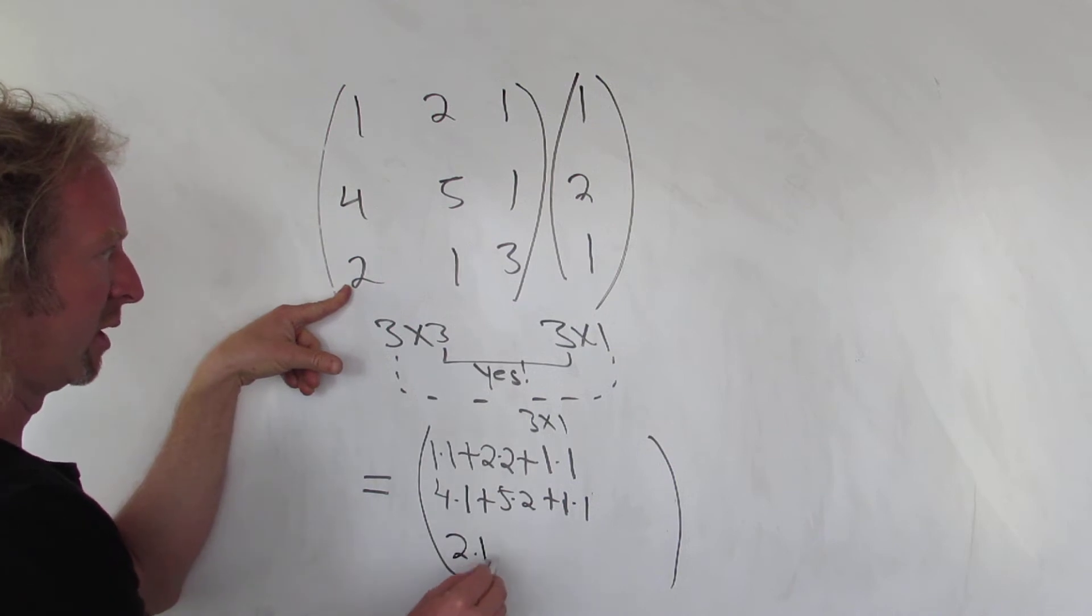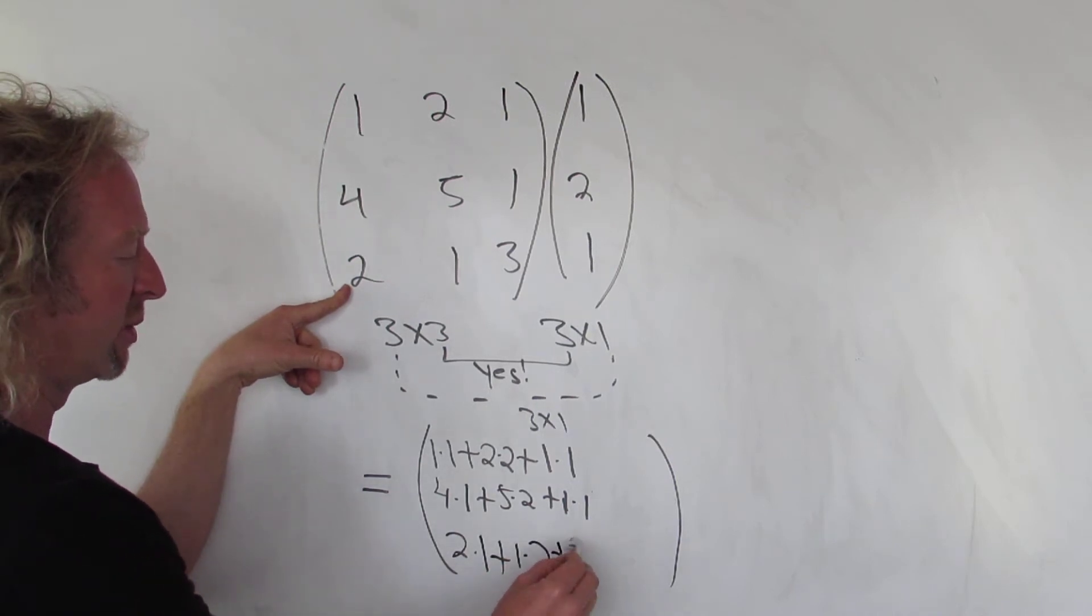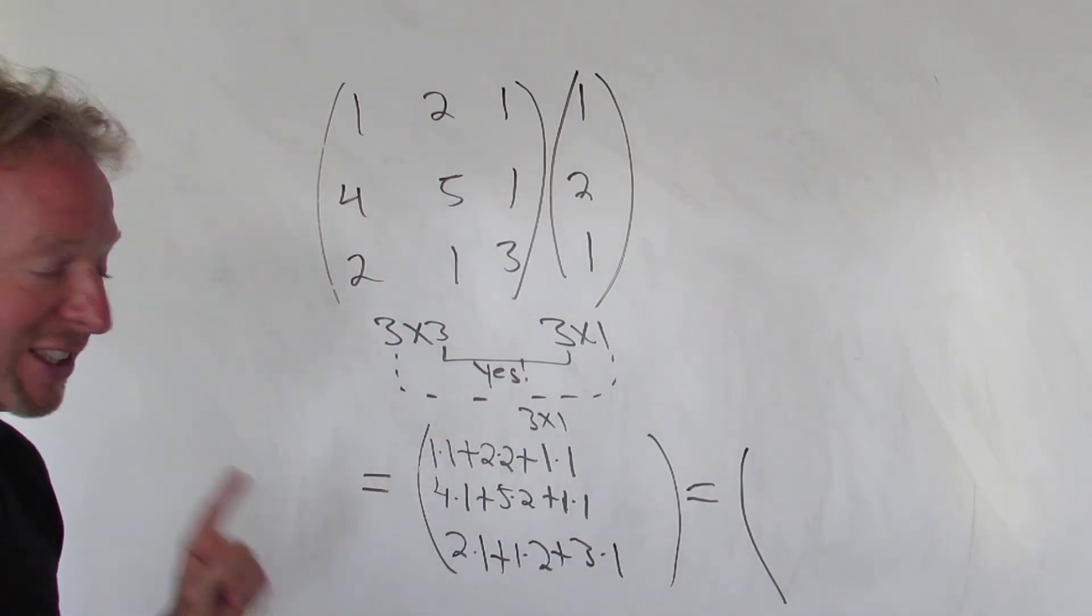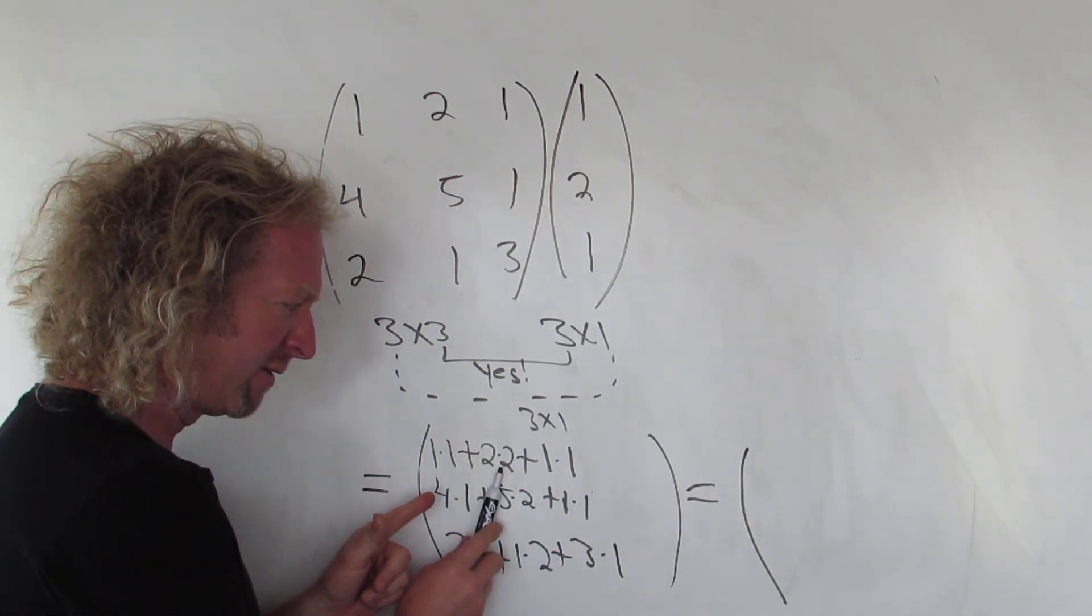So 2 times 1, plus 1 times 2, plus 3 times 1, is equal to—let's see if that's not messed up—1 plus 4 is 5, right, 1 plus 4 is 5, 6.